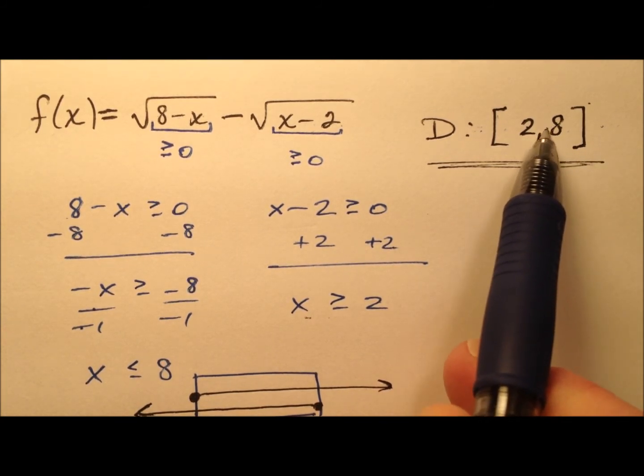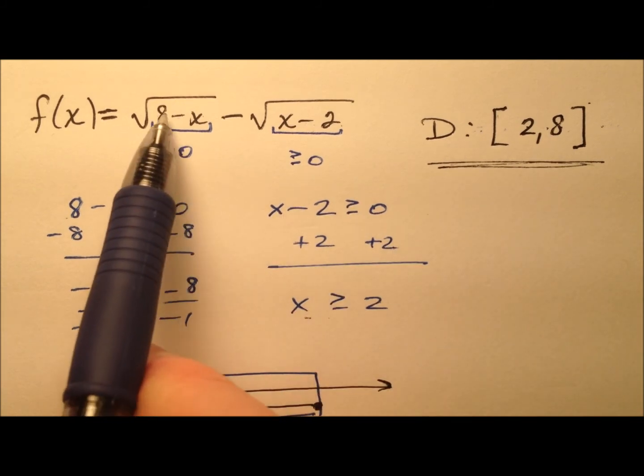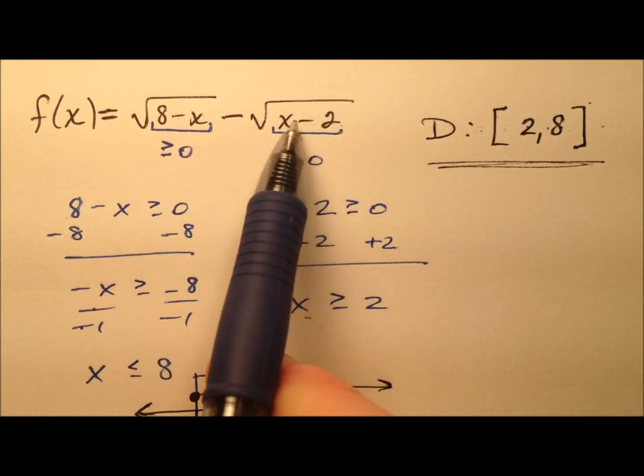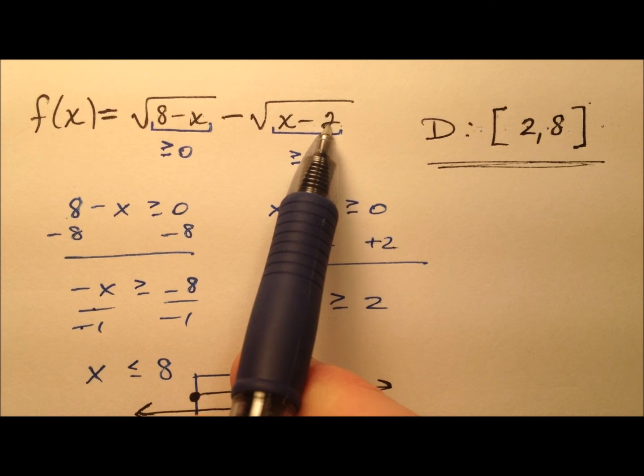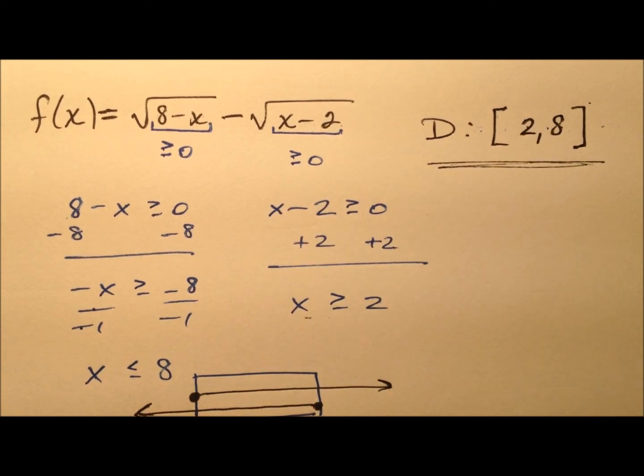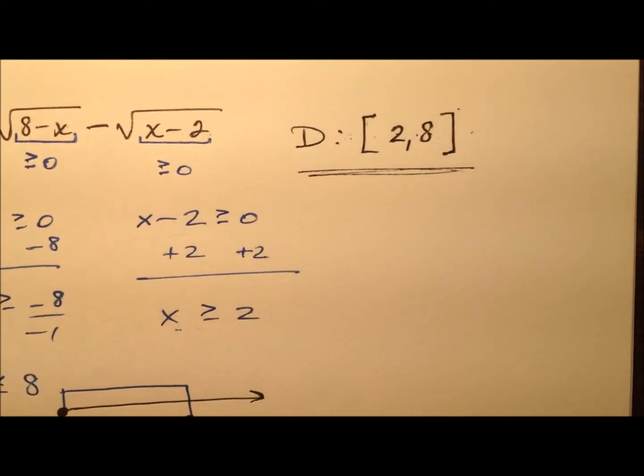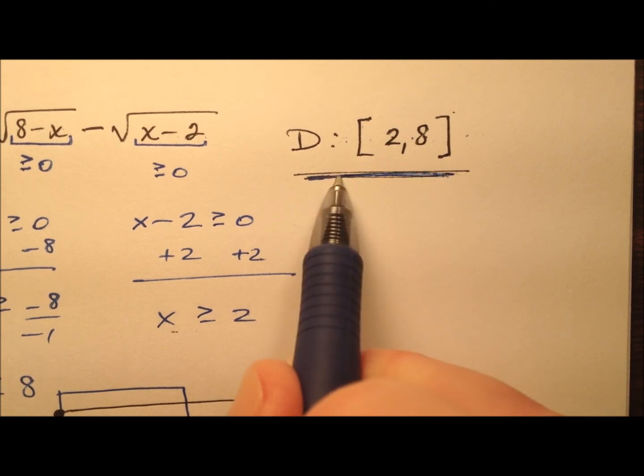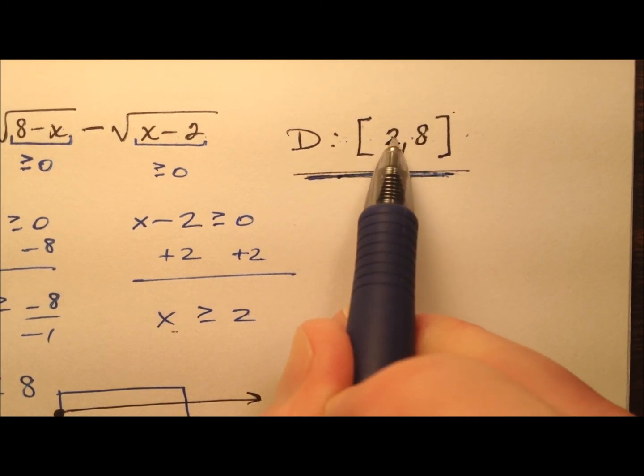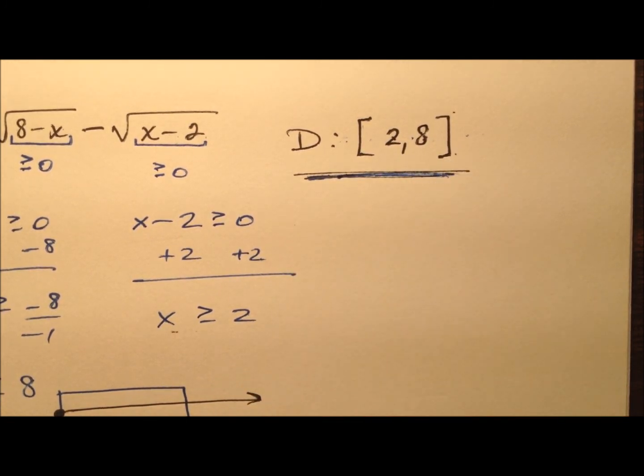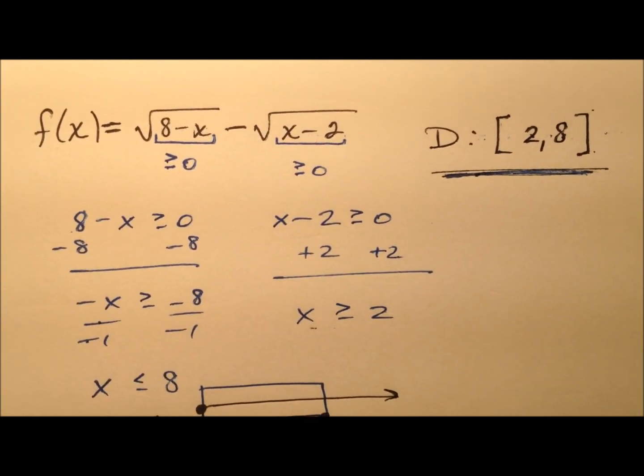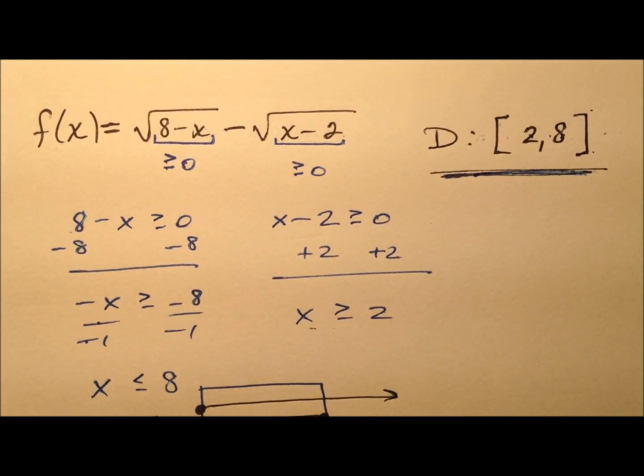And so we'll try a number in between. So let's try 5. So 8 minus 5 is 3, the square root of 3. And then 5 minus 2 is going to be 3 as well. So the 5 in the middle there does work. So we can see the domain here for this function is going to be from 2 to 8. And it's including both of those endpoint values. And let's go ahead and take a quick look at this function.